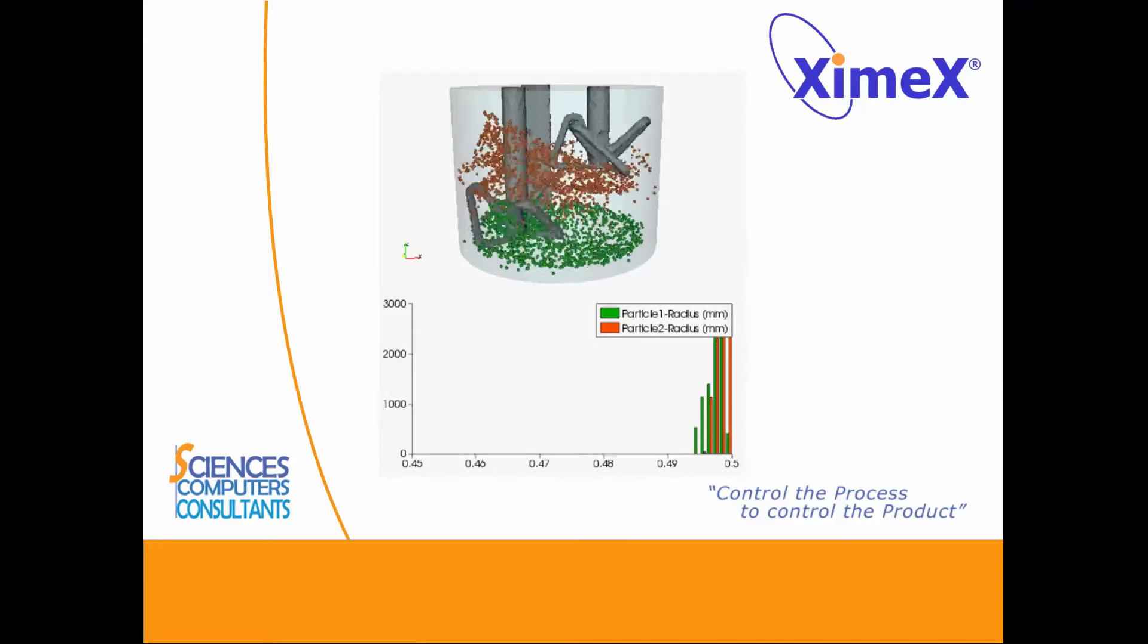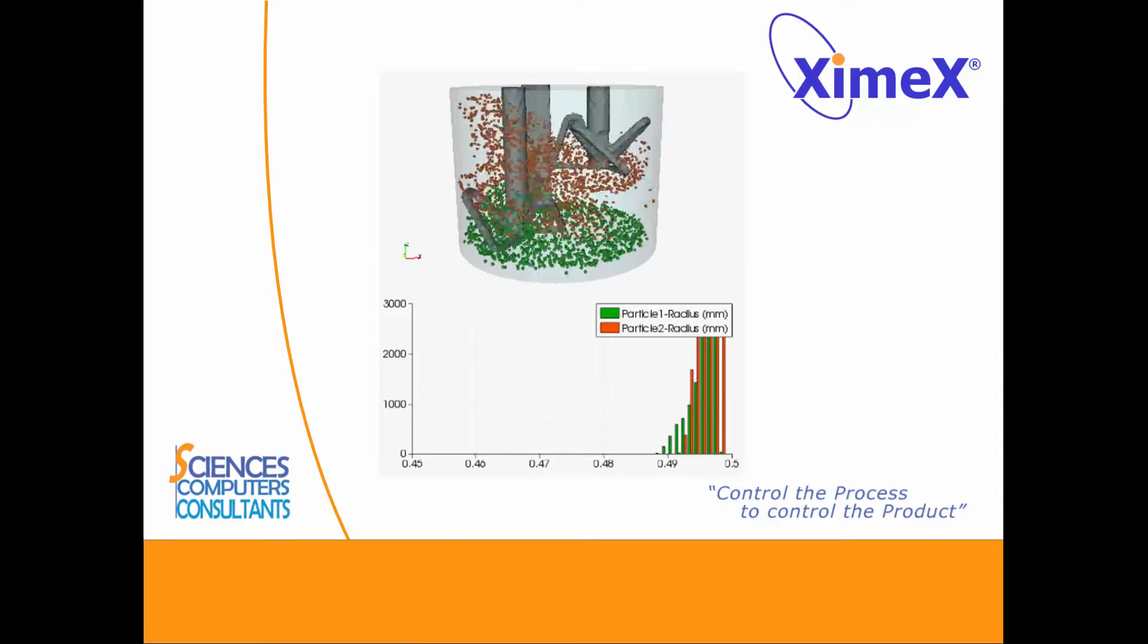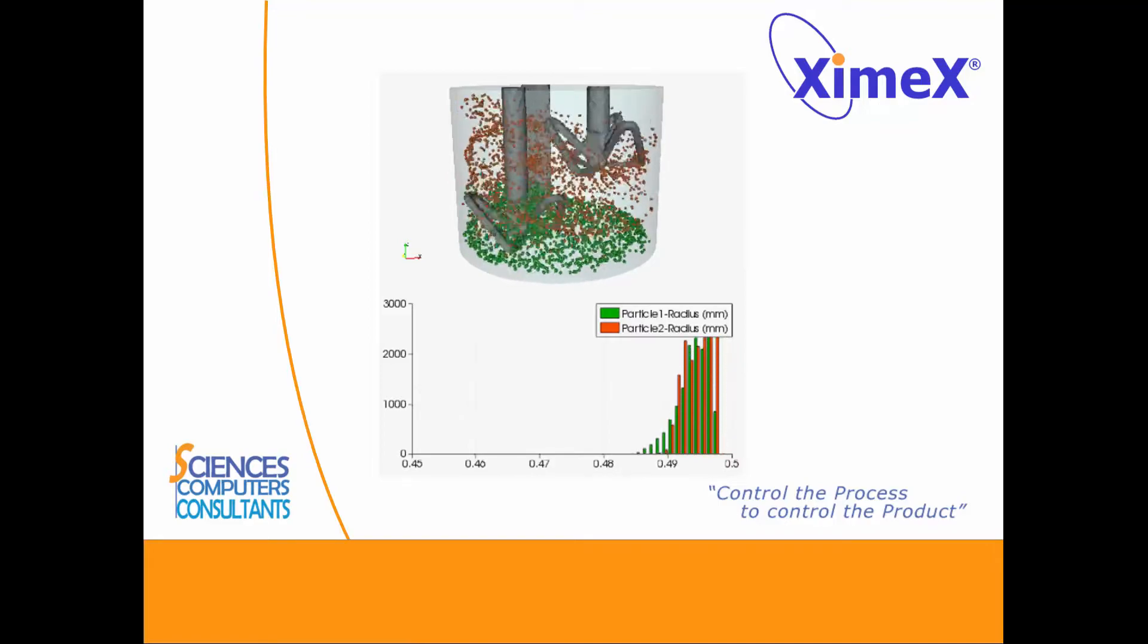We see the evolution of particles' radius at two different heights in the batch mixer. This result is a marker of dispersive mixing.